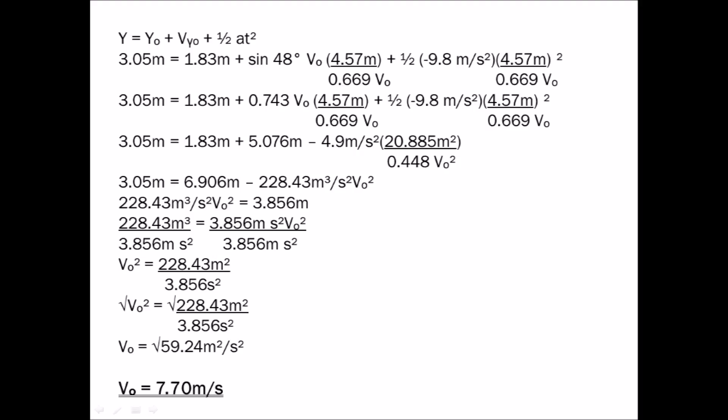Let's simplify. In the term 0.743 v₀ times 4.57 divided by 0.669 v₀, the variable v₀ cancels out, leaving 0.743 times 4.57 divided by 0.669, which equals 5.076 meters.